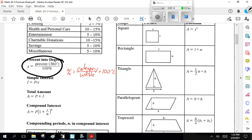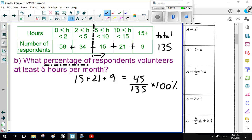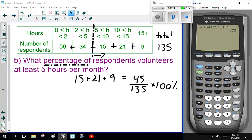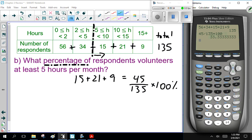So, what if I have 45, the 135, that's what I need. My calculator, 45 divided by 135 times 100 equals 33 and a third percent. Okay?